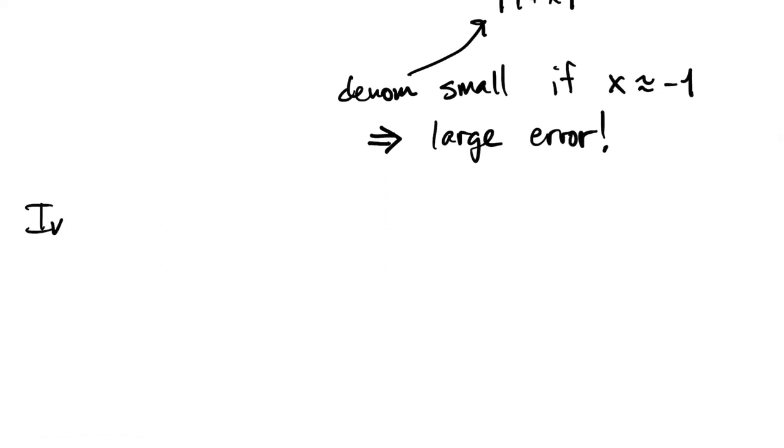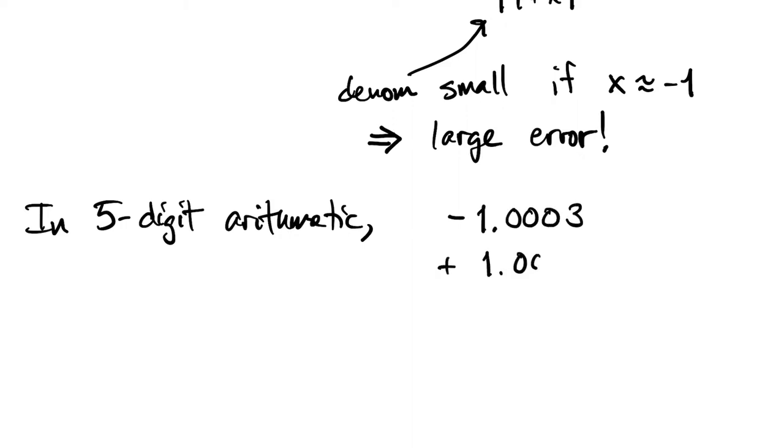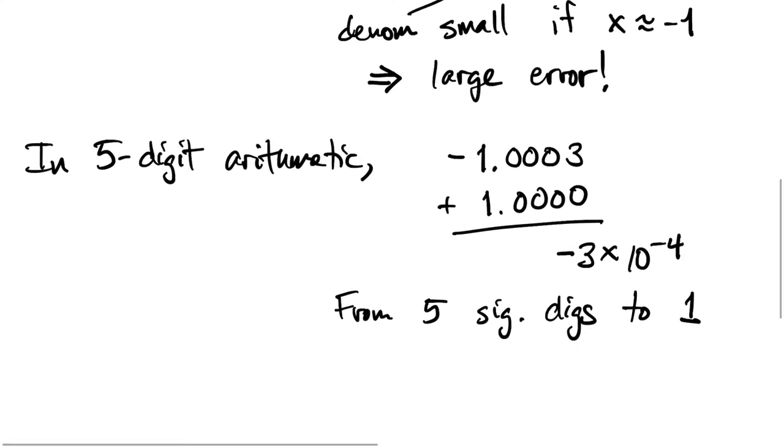So to illustrate this more concretely, let's say we were doing five-digit arithmetic and we had the two operands, negative 1.0003 and 1.000, then their difference is just negative 3 times 10 to the minus 4, which means that the operands both had five significant digits and the answer only has one.